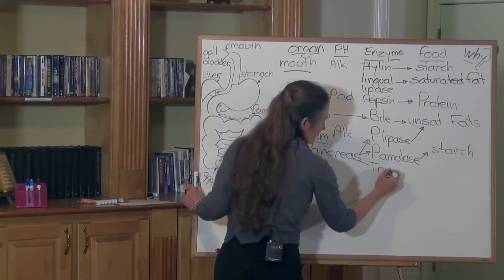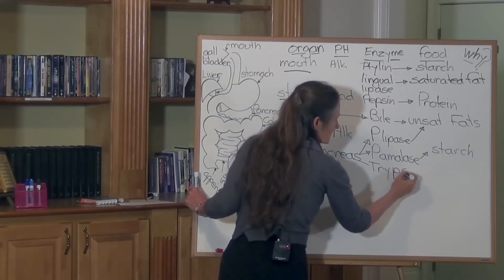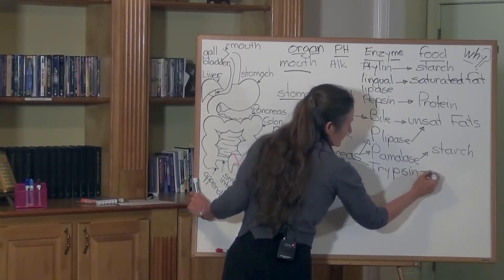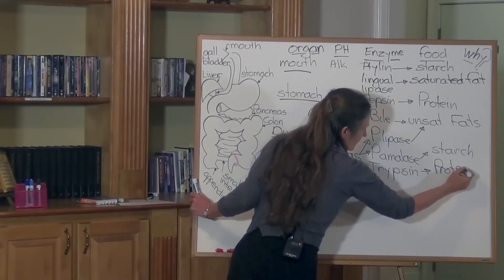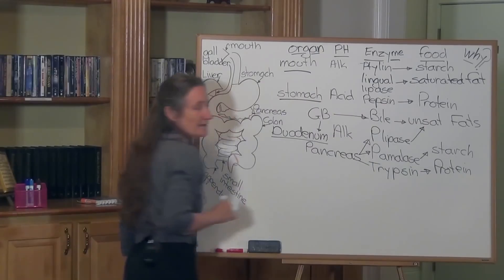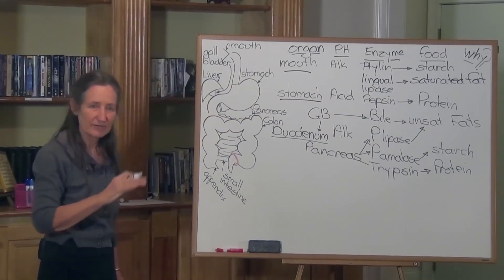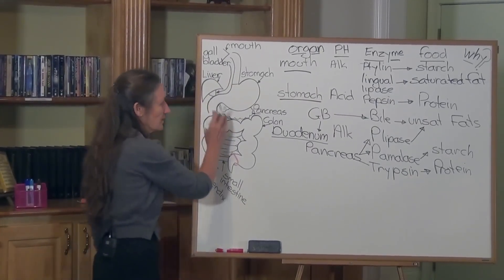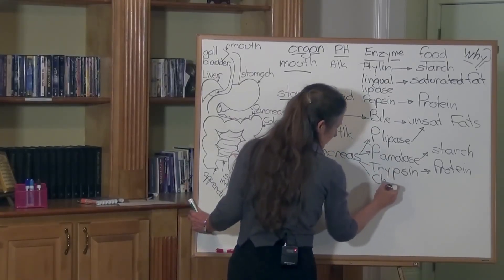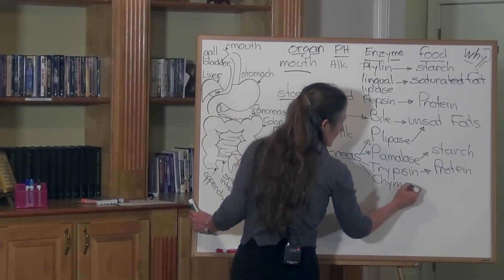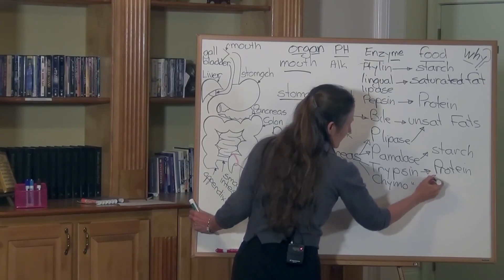Trypsin and chymotrypsin are the enzymes that finalize protein digestion. So protein digestion is begun in the stomach and finalized in the duodenum under trypsin and chymotrypsin. These are two enzymes that break down protein.